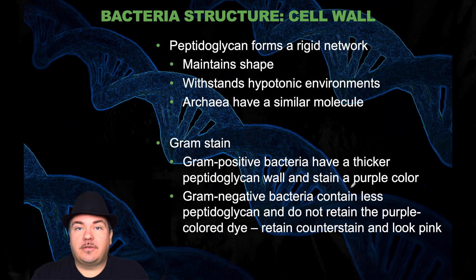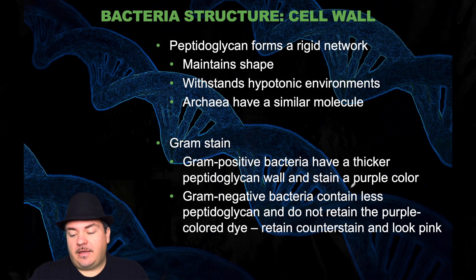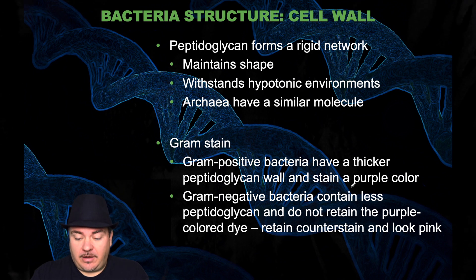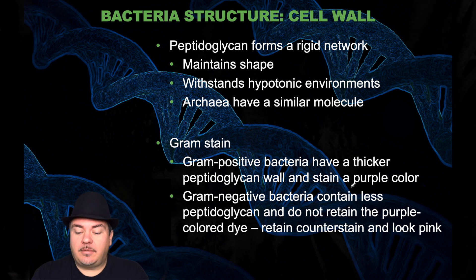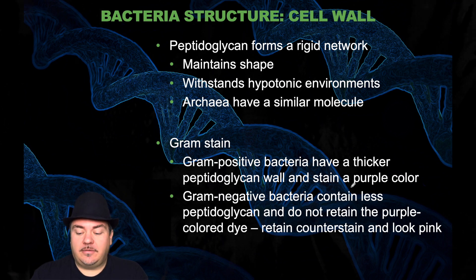Peptidoglycan forms a rigid network that helps maintain the shape of the cell and withstands osmotic environments. Archaea have a similar molecule. The name gram-positive or gram-negative comes from gram staining, a procedure done in the lab. Gram-positive bacteria have a thicker peptidoglycan wall and stain a purple color, whereas gram-negative bacteria contain less peptidoglycan and do not retain the purple dye.